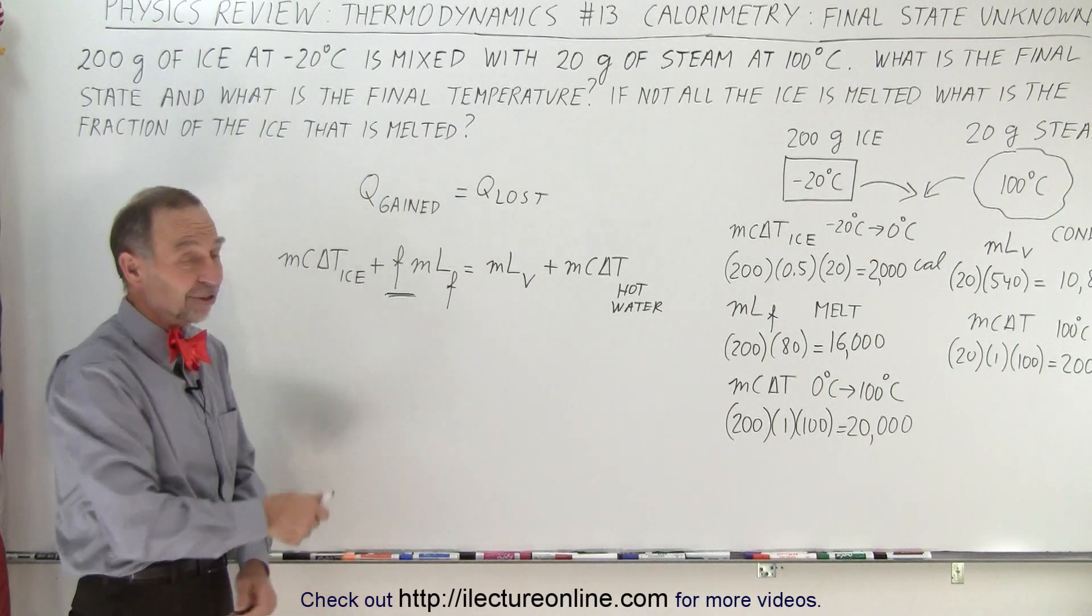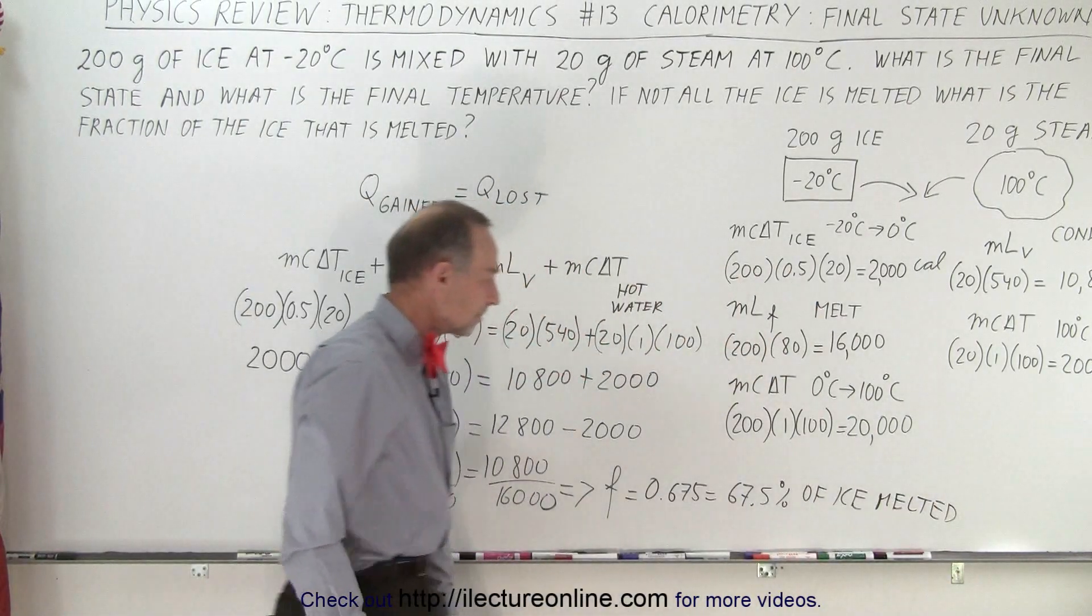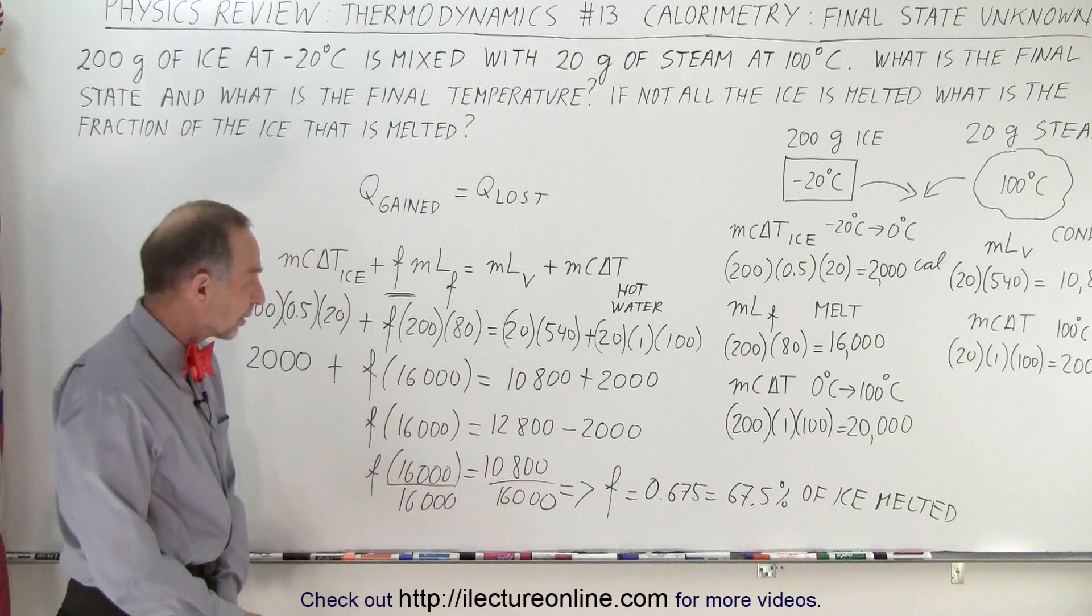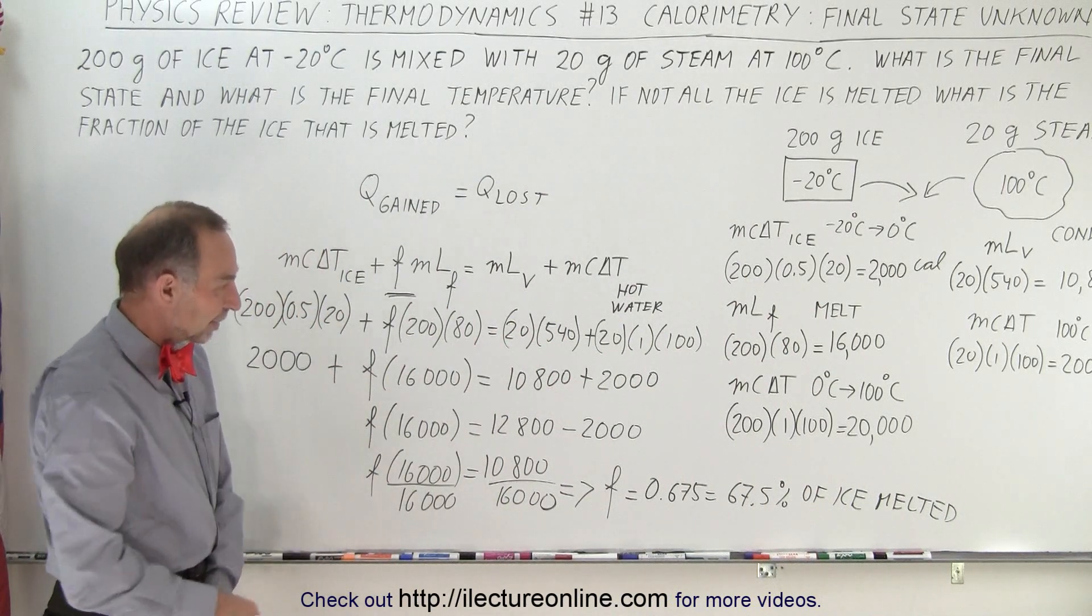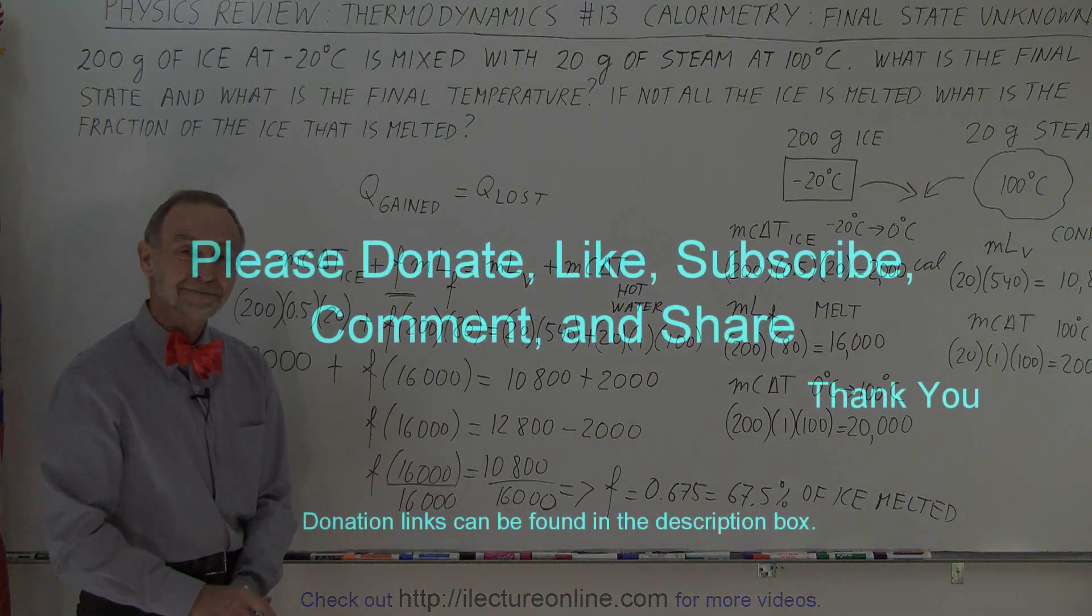The rest is just algebra. And there you go. That is how you then figure it out. It turns out that about 2 thirds of the ice was melted.